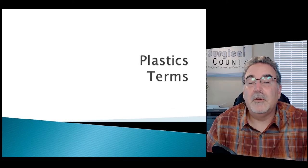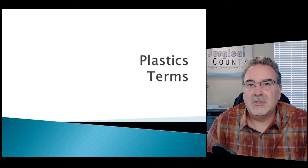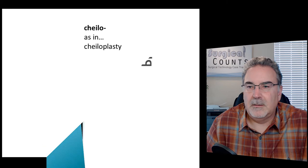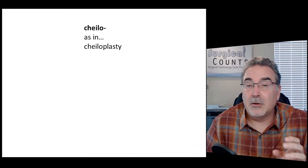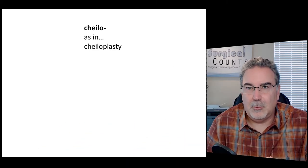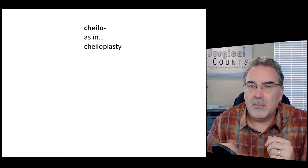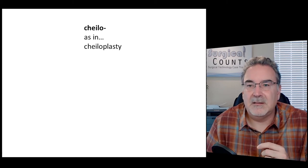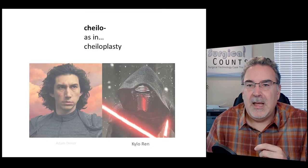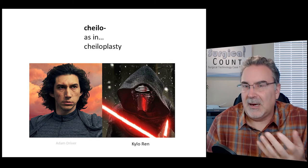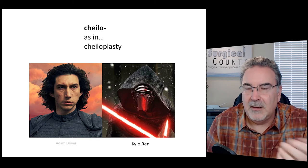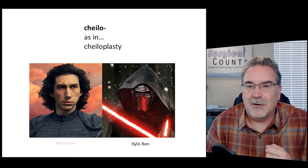We'll start by reviewing some of the terms and anatomy associated with plastic surgery. The first term is the medical term 'chilo,' as in cheiloplasty. Chilo means lips, and the way you pronounce it is 'Kylo,' as in Kylo Ren, the character from Star Wars.